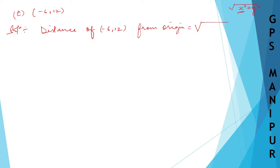Here, instead of x, you are going to put -6, and instead of y, you are going to put 12. So put here (-6) whole squared plus (12) whole squared.